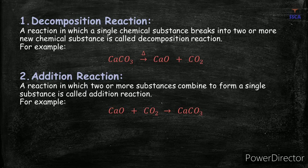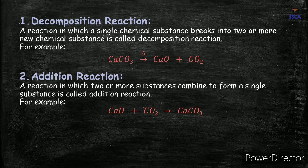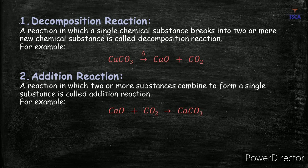So if you heat calcium carbonate, it splits into calcium oxide and carbon dioxide. In the arrow of the equation, there is a triangle symbol which we call delta, indicating that heat is required. Those chemical reactions which require heat to start are called endothermic reactions. You need to give energy to them.